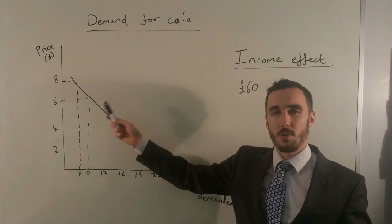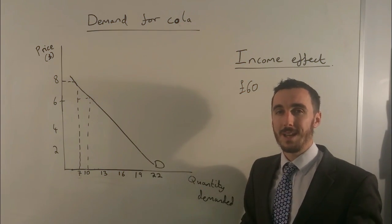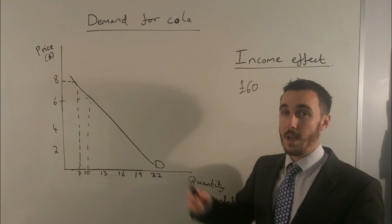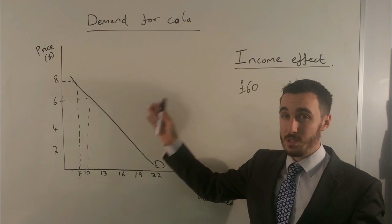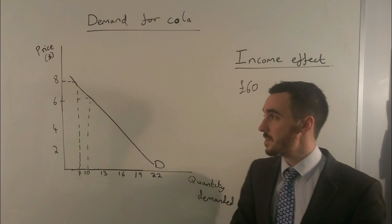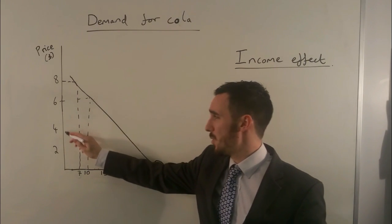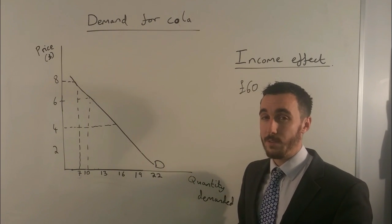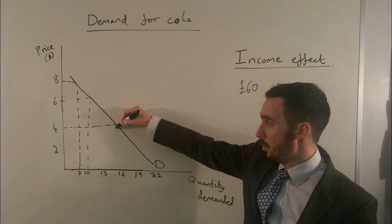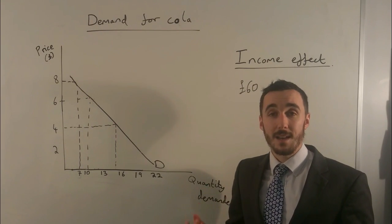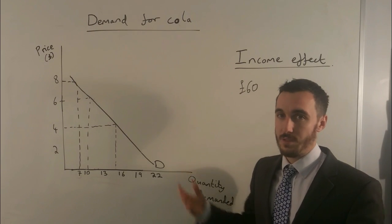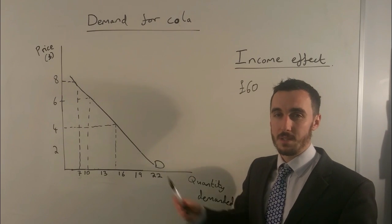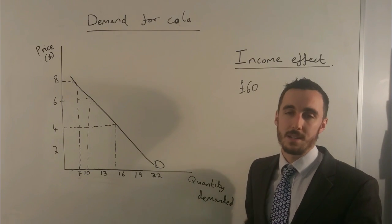But why then, as the price goes down, do we demand more? Well in economics we have to assume that everything else is equal. So if I demand a certain amount of cola, let's say 10 cans at £6, then the price goes down to £4, I assume that everything else is equal. So I have more income and therefore I spend more of my income on more cans of cola. In reality of course I might spend my extra income on other things but we assume in this case that the cheaper price of cola means more income, more money to spend on cola, higher demand of cola.